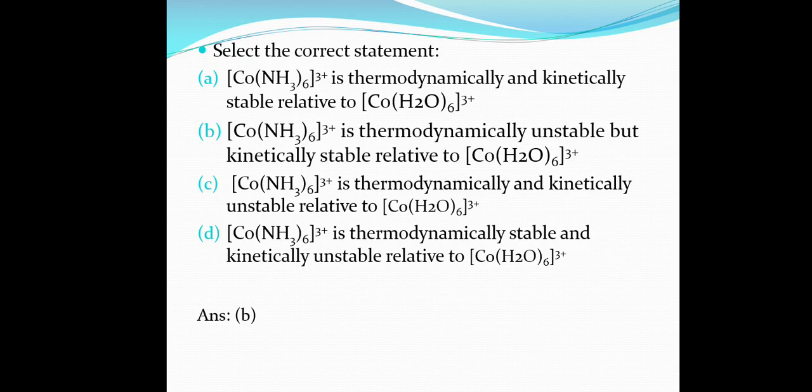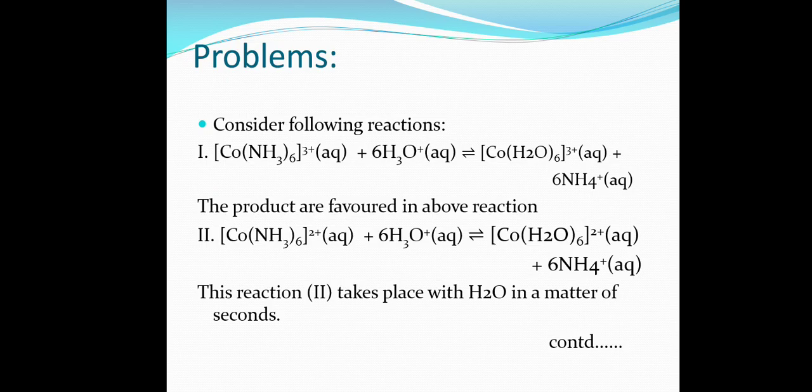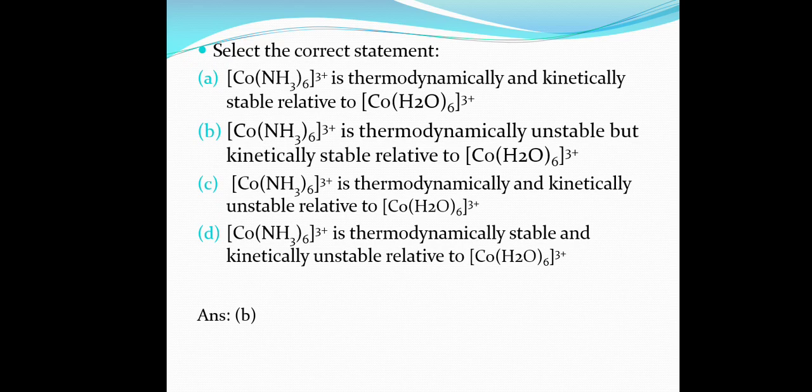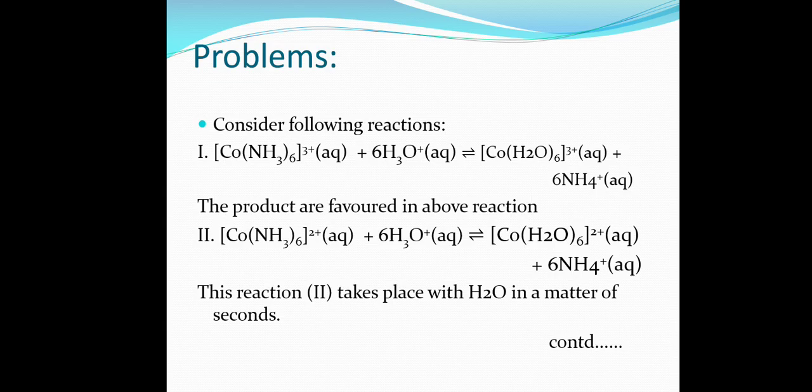Co(NH₃)₆³⁺ is thermodynamically unstable, as discussed in the previous sections. However, it is kinetically stable — comparing reaction 1 and reaction 2, the second reaction takes place in a matter of seconds, meaning Co(NH₃)₆³⁺ has very little tendency to rapidly go towards Co(H₂O)₆³⁺. Therefore, Co(NH₃)₆³⁺ is kinetically stable but thermodynamically unstable.